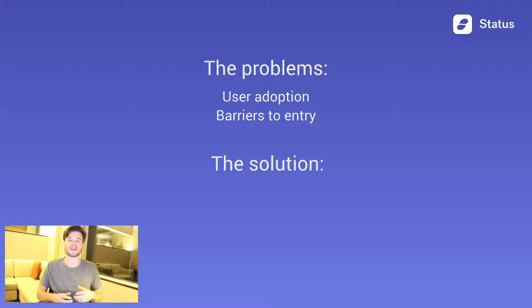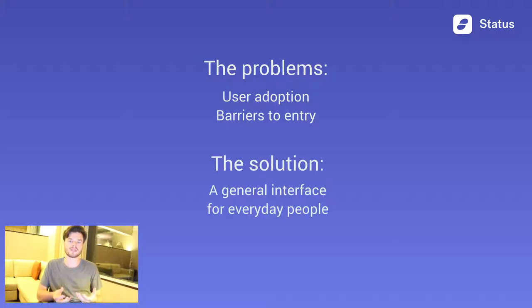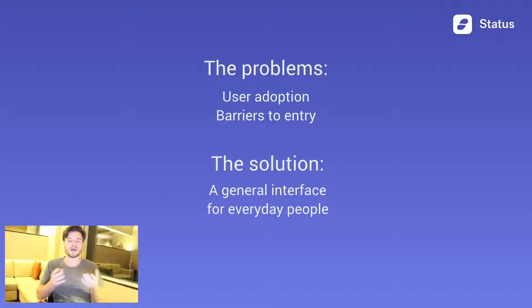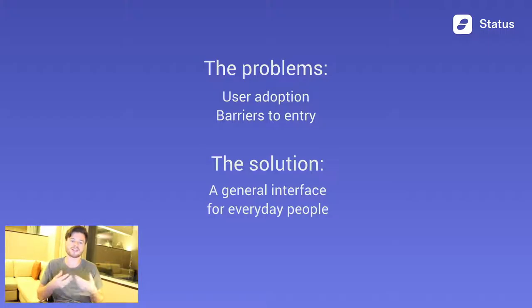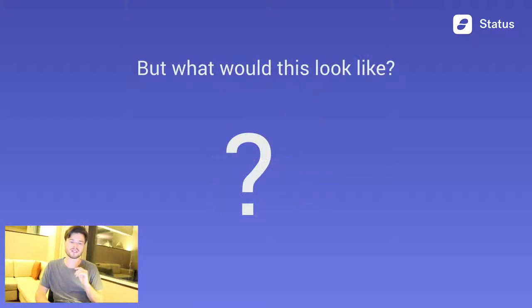And to solve this problem, what became clear to us is that we should build a general user interface — a gateway, if you will — between end users and decentralized applications. So how do you create a product that can benefit people right now and provide real value, but is also general and adaptable enough to remain competitive and evolve as new use cases present themselves? And what would such an interface look like?